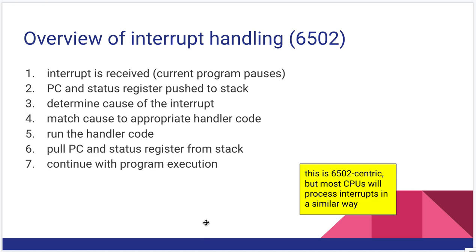Let's look at how the 6502 handles interrupts. Compared to modern systems it's pretty simple, but the concept is there. Here's the sequence of events: a program is running and an interrupt is received, immediately pausing that program. What the 6502 is going to do is take the program counter and the status register and push those to the stack — one byte each, so a total of two bytes. After that, we look at what was the cause of the interrupt and use that cause to select an appropriate set of handler code. Then we run that handler code, and when it's done, we pull the program counter and the status register back off the stack and continue with our program execution.